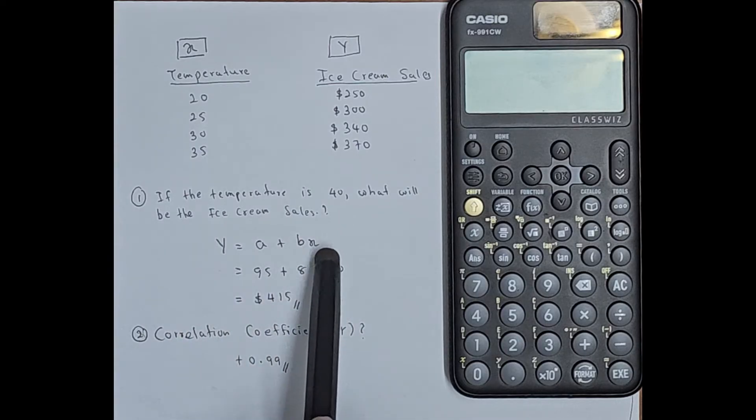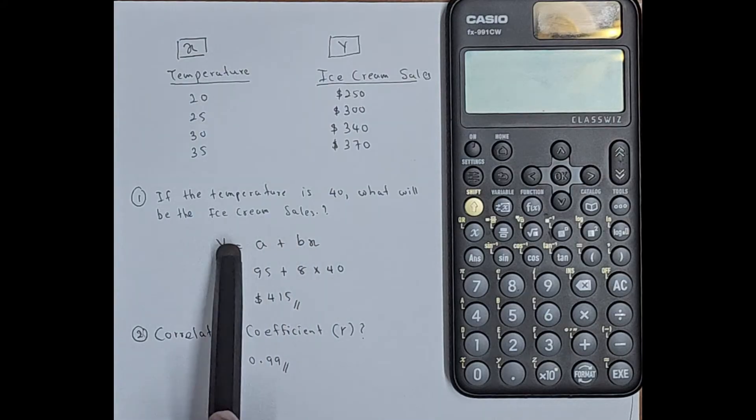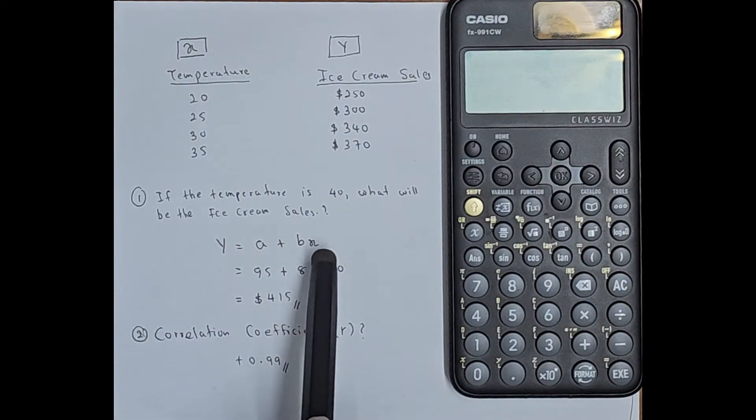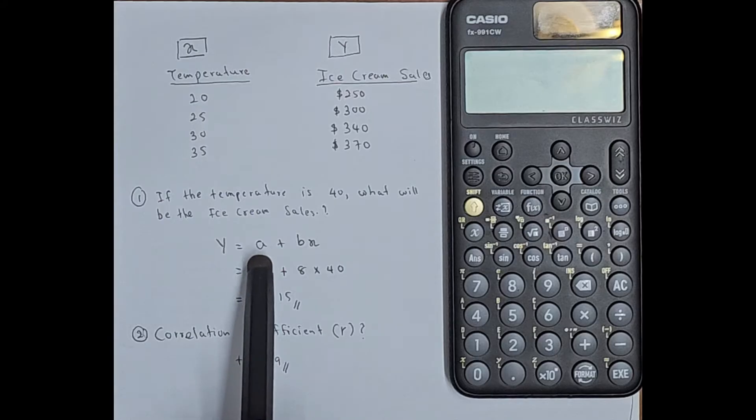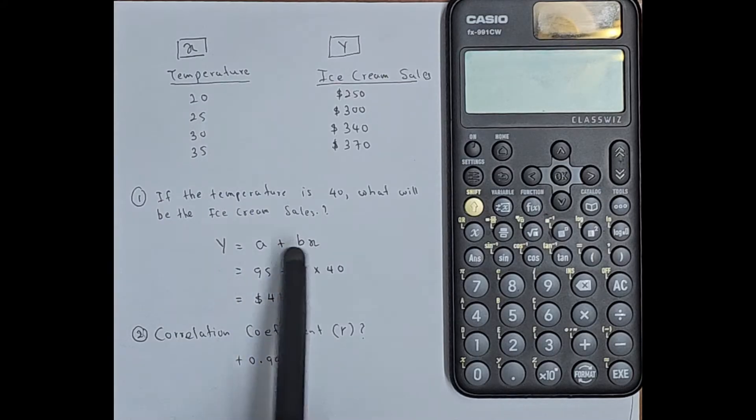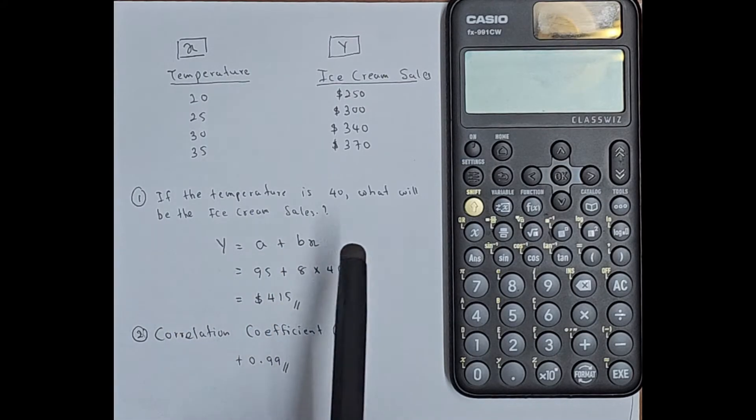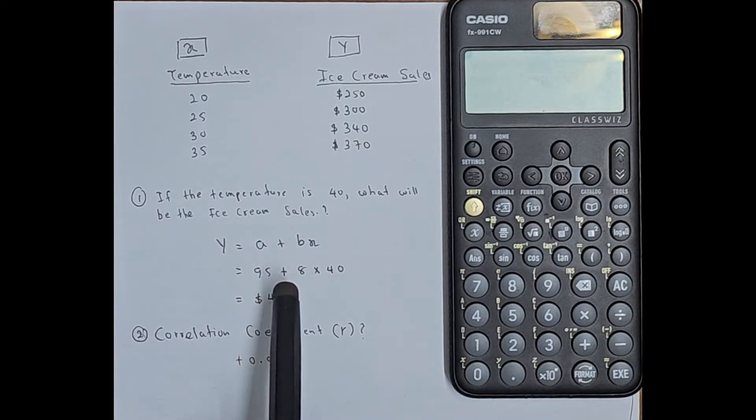So here what are we going to find? If X is 40, what will be the ice cream sales? In order to find that you should know the value for A and you should know the value for B. So how to find it using this particular calculator?